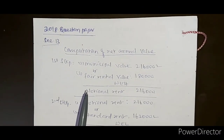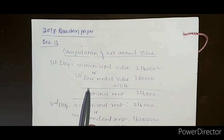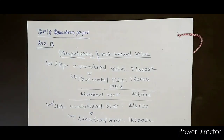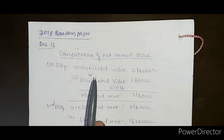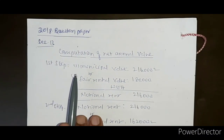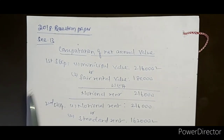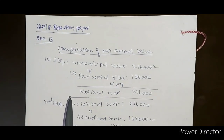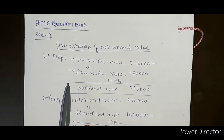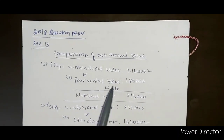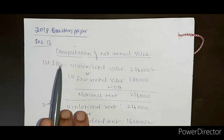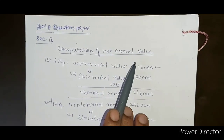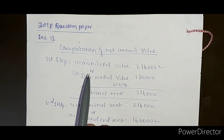My dear students, today I am going to explain the 2018 question paper. In this question paper we have three questions: Section A has one question, Section B has one question, and Section C has a question related to computation of net annual value.